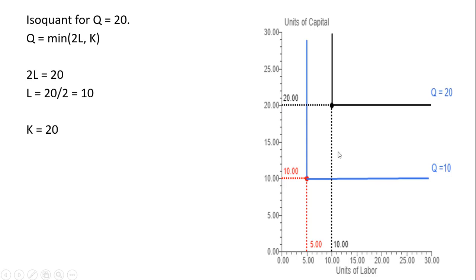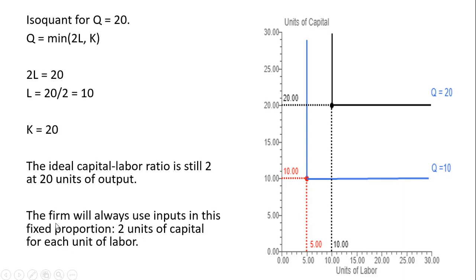20 units of capital, 10 units of labor. So again, the ideal capital labor ratio is still 2, 20 divided by 10 is 2, that doesn't change. So the firm will always use inputs in this fixed proportion, 2 units of capital for each unit of labor.